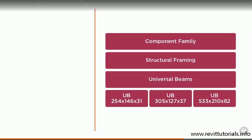Now within each of these families, you will have different family types. For my universal beam family, I may have many different family types. Each of the different standard section sizes for my universal beams are different family types, which all belong to the same universal beam family.